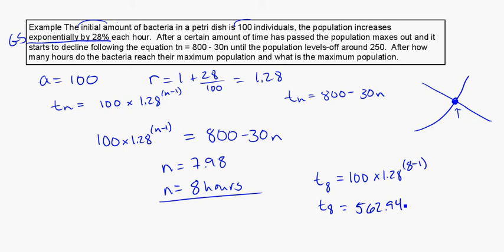562.94. Again, because we're dealing with bacteria here, we probably want to round it. So you could say 562 or 563. I might say 563, because we're awfully close to it. So its maximum population. 563 bacteria, and it happens at 8 hours. And we get that information by setting up these two equations, and putting them equal to each other in my solver.